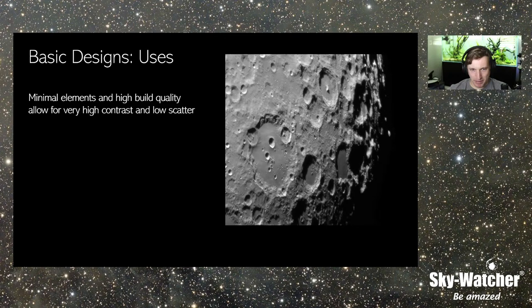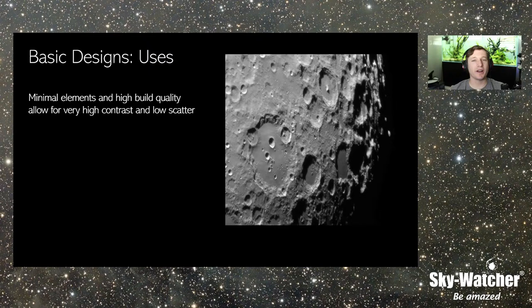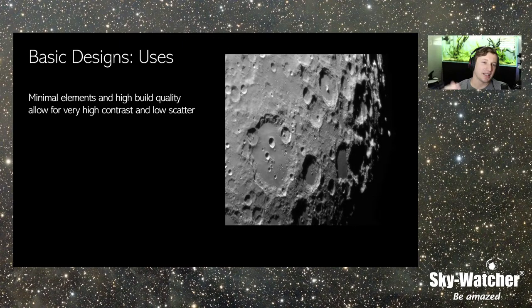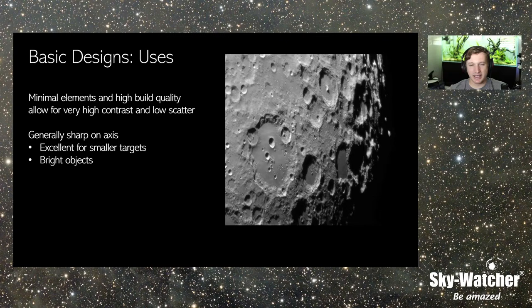To step back: a lot of the eyepieces we've just talked about are very minimalistic — not crazy wide apparent fields, not long eye reliefs, four elements at the max. Higher-quality versions of these designs generally have very high contrast and low light scatter, because every additional piece of glass is one more element light has to travel through. Many of these eyepieces — the monocentrics and orthos — are very sharp on-axis, which makes them great for smaller targets at the center of the field of view.